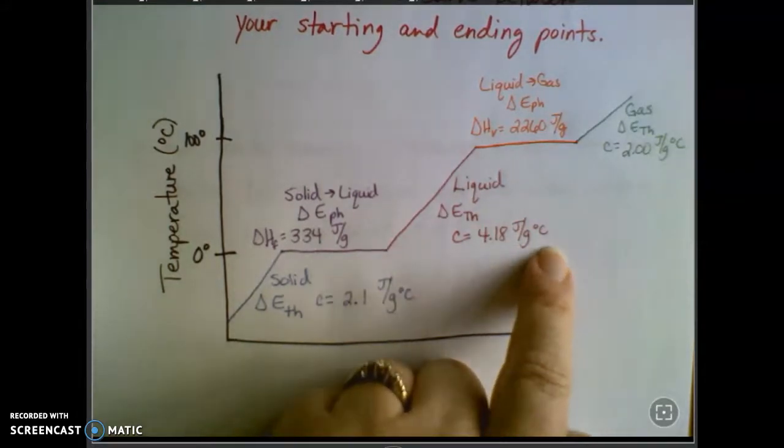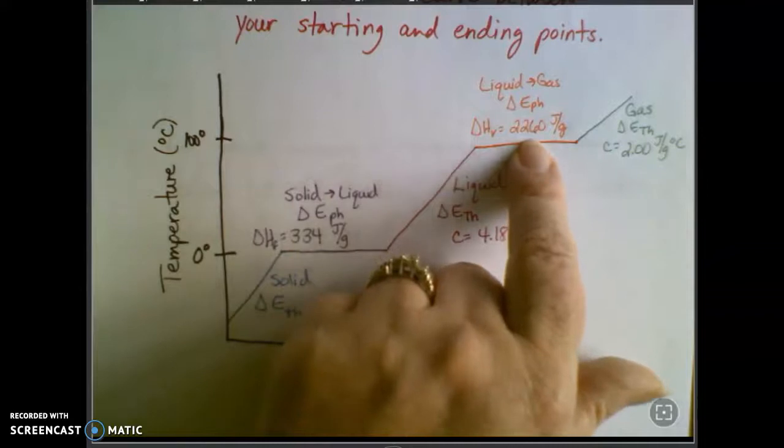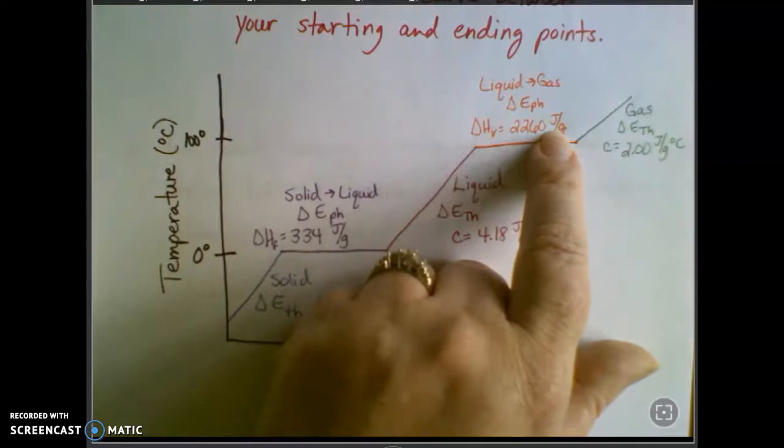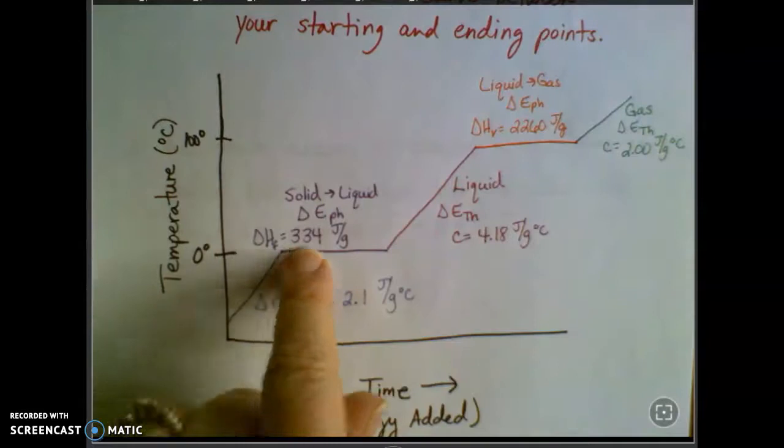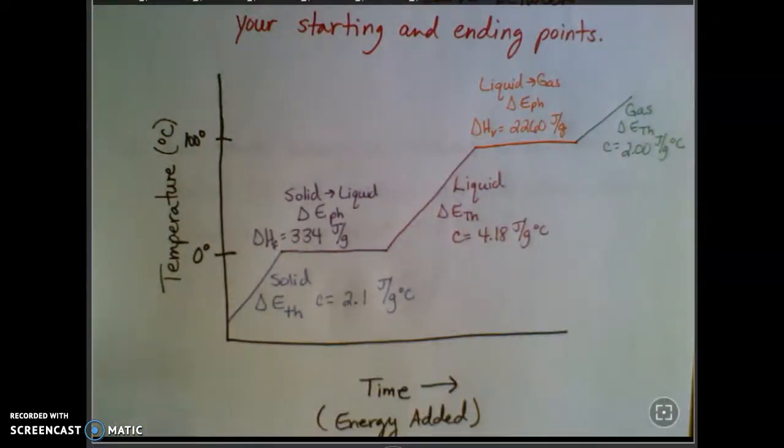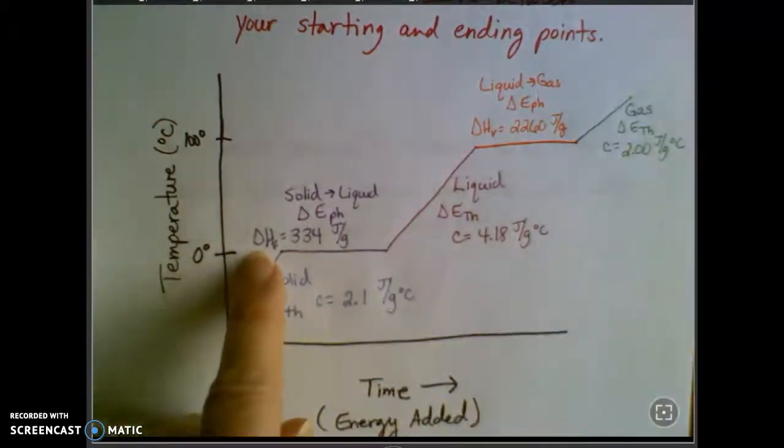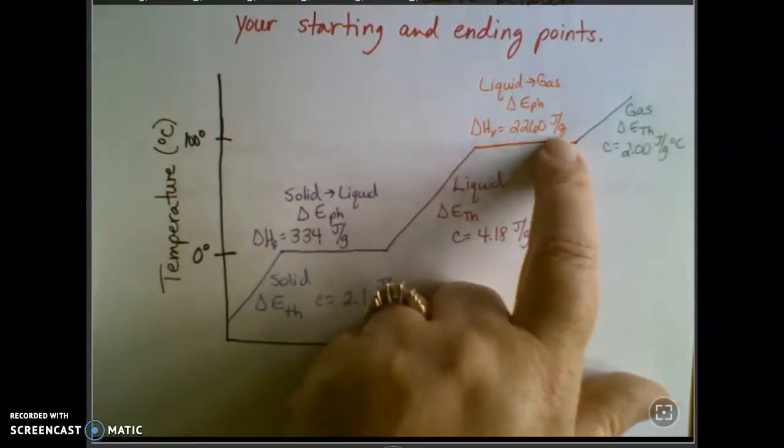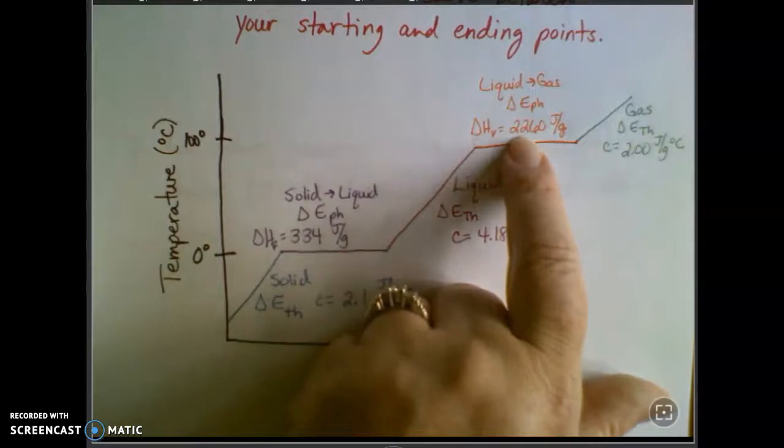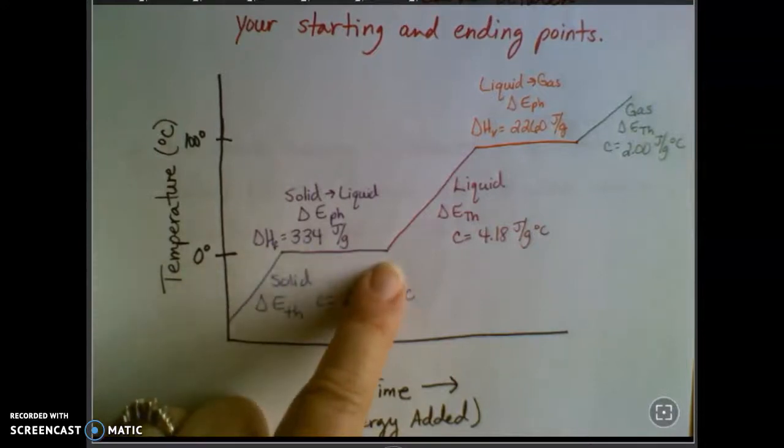And this would also make sense if you think about the states of matter. It takes 2,260 joules to change one gram of liquid water into steam. So compare those two numbers. When we're looking at energy bar charts, we also said there's a lot more difference between a liquid and a gas than there is between a solid and a liquid in terms of spacing. And you can see that it takes a lot more energy to get a gram of liquid water to change to steam than it does to get a gram of solid water to change into liquid water.